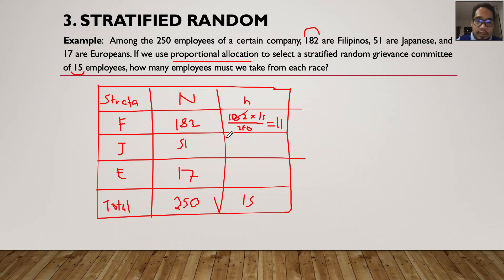So how many Japanese? How many Europeans? Let's find out. So we'll write 51 times 15 and divided by 250. Please do imagine that that's 250. All right. So let's do the math. 51 times 15 divided by 250. It gives me 3.06. That will simply just become 3.